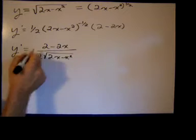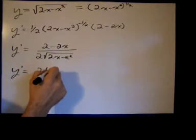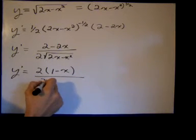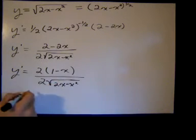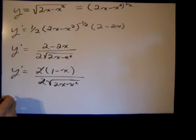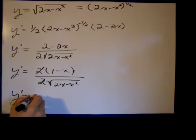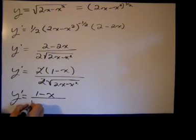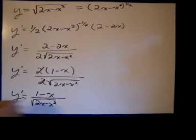Notice I can factor out a 2 in the numerator. So we get 2 times 1 minus x in the numerator over 2 times the square root of 2x minus x squared in the denominator. The 2's will cancel. So therefore, making our derivative look nice and clean of 1 minus x over the square root of 2x minus x squared.